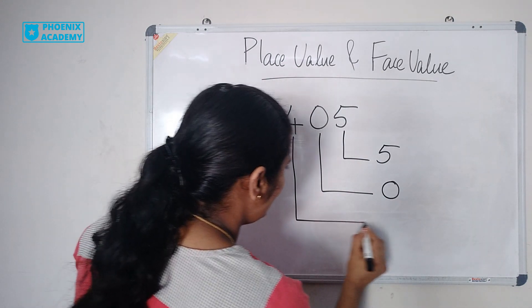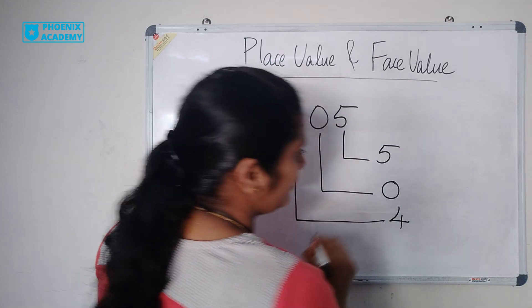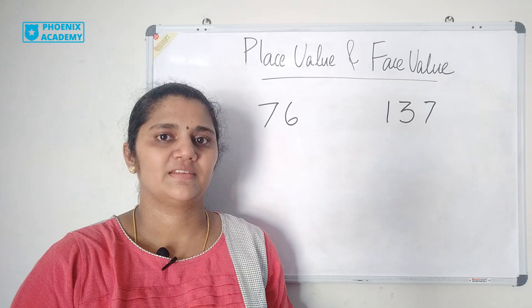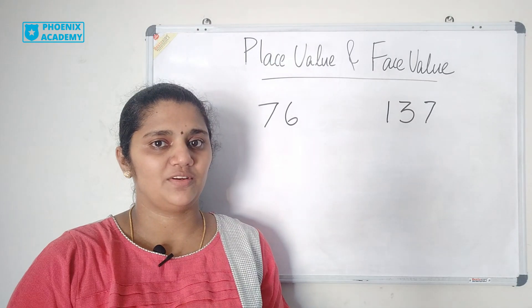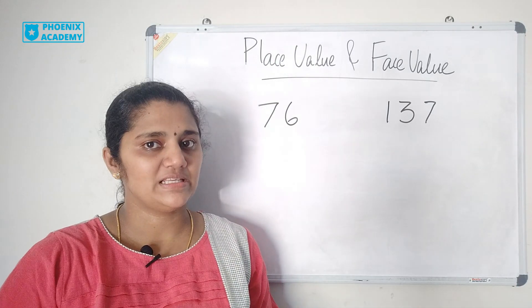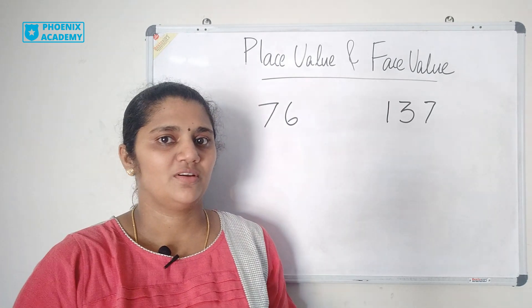What is the place value of 4? Place value of 4 is 400. I hope you understand the difference between place value and face value.